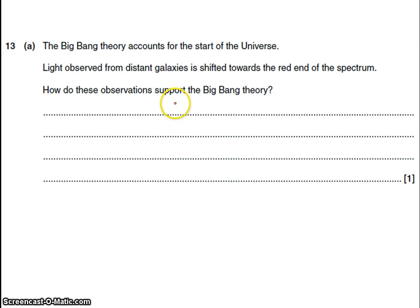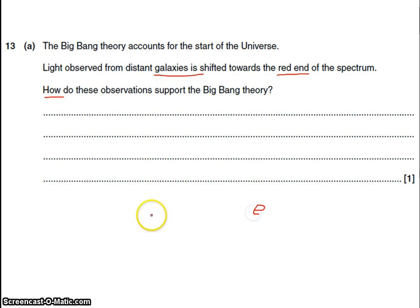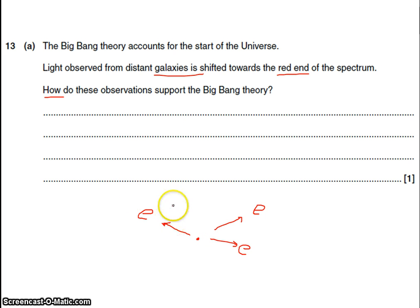The last question is about the Big Bang. Light observed from distant galaxies is shifted towards the red end of the spectrum — this is called redshift. How do these observations support the Big Bang theory? Redshift provides evidence of the Big Bang because when we look at light from galaxies, the galaxies are moving away from us, and it's that process of moving away from Earth that makes their spectrum appear shifted towards the red end. This provides evidence that galaxies are moving away, and if that's true, tracking back, they must all have started from a common point — which gives us the Big Bang.